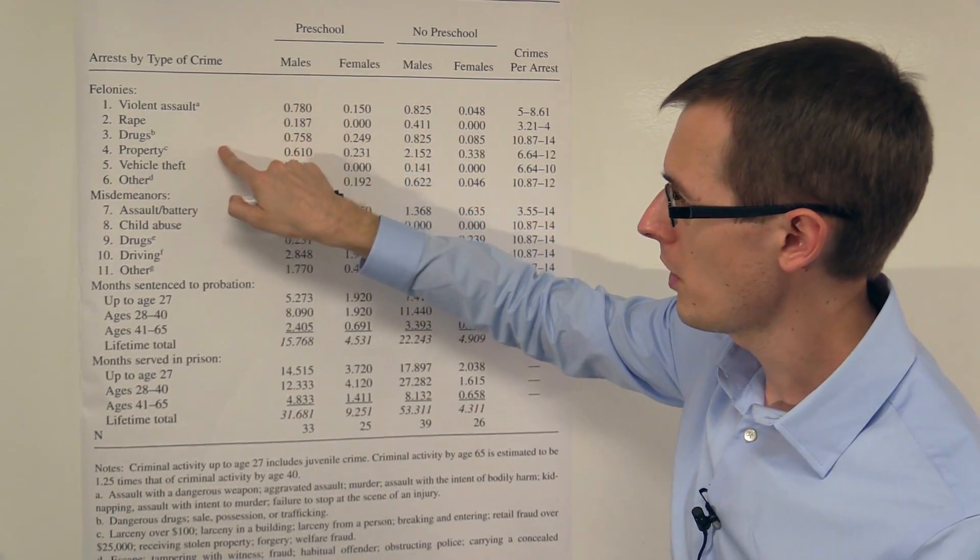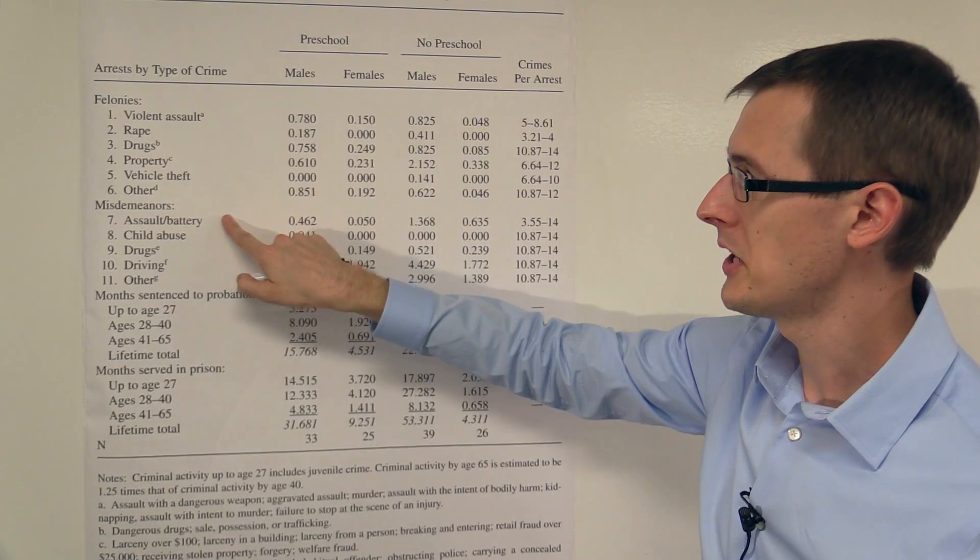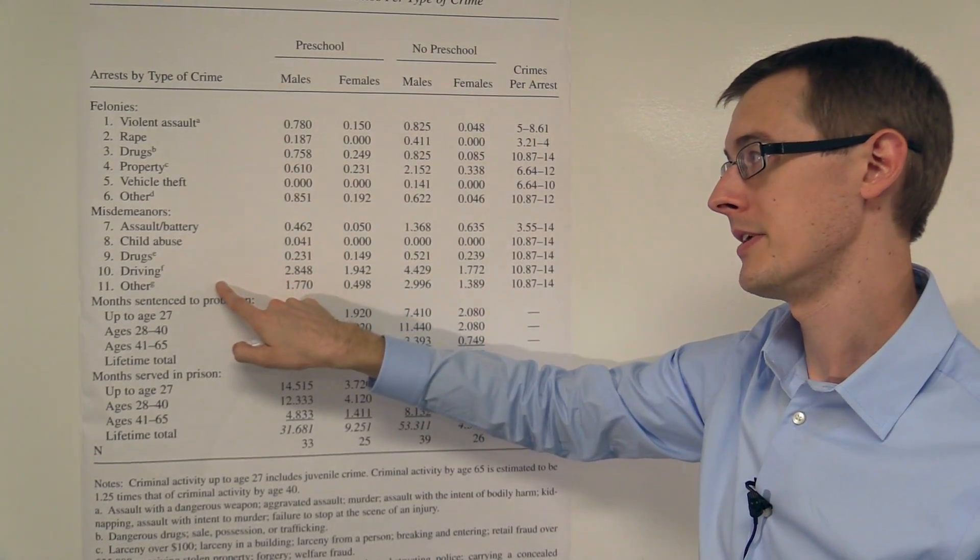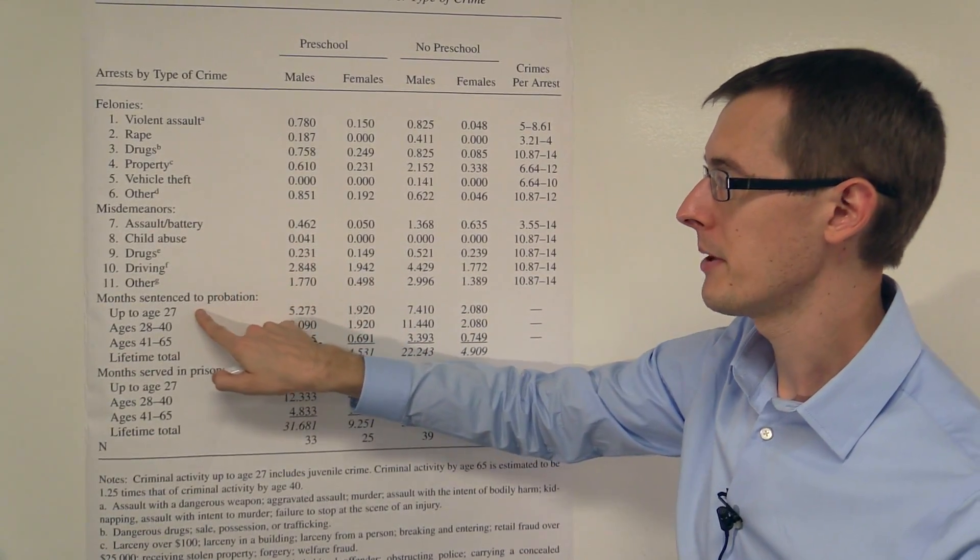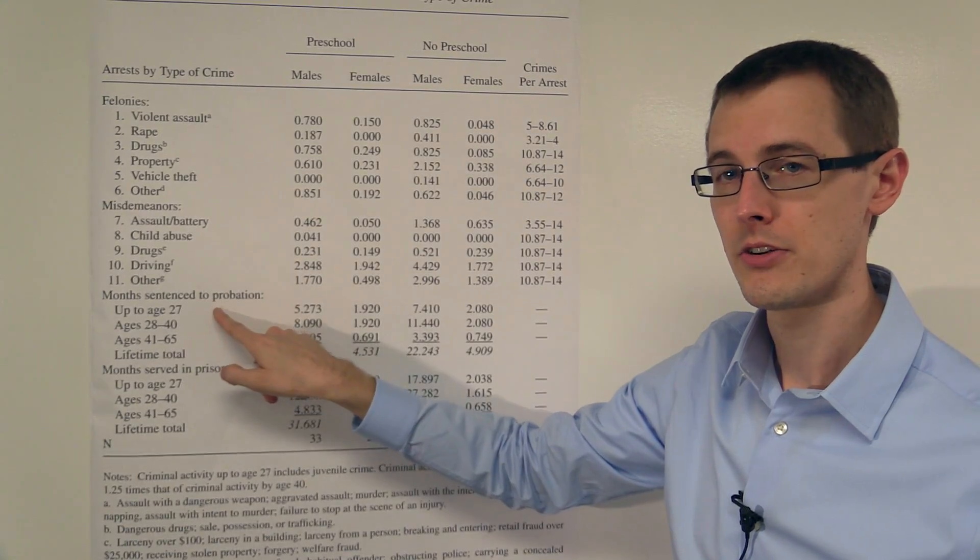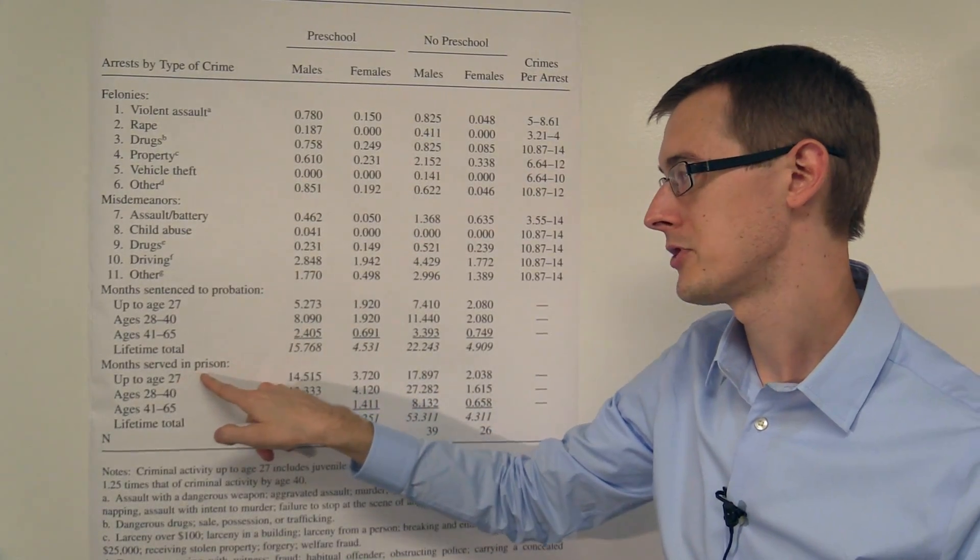And over here on our rows, we've got lots of different measures of criminal activity, different crimes you could commit, or how many months you're sentenced to probation at certain age ranges, and how many months you've served in prison.